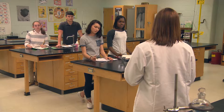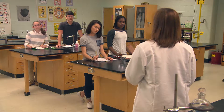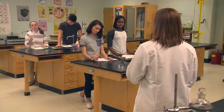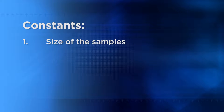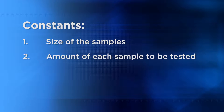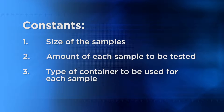In addition to the distance between where the samples were retrieved, did you come up with three more constants for your experiment? Yes, we decided that the size of the samples is a constant — each one is two liters — and we're testing 50 milliliters of each sample, so that's another constant. We also decided to place the 50 milliliter samples into white plastic cups, which is another factor that's the same in this experiment.